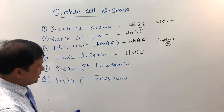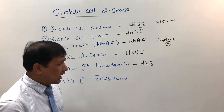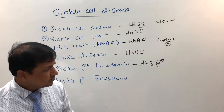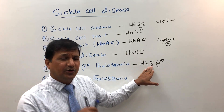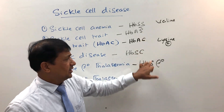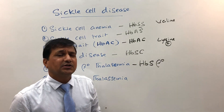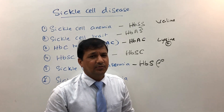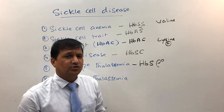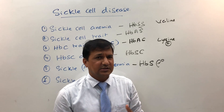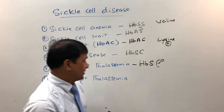In sickle beta-0 thalassemia, one beta globin is of sickle type and the other beta globin is not synthesized at all — hence the '0' in the name. The one beta globin that is synthesized is abnormal, with glutamate replaced by valine like in sickle cell anemia. Patients generally do not have a significant amount of normal hemoglobin; more than 90% of the hemoglobin will be of sickle type. Patients will have vaso-occlusion, micro-infarction, splenomegaly, and all the signs and symptoms seen in sickle cell anemia.